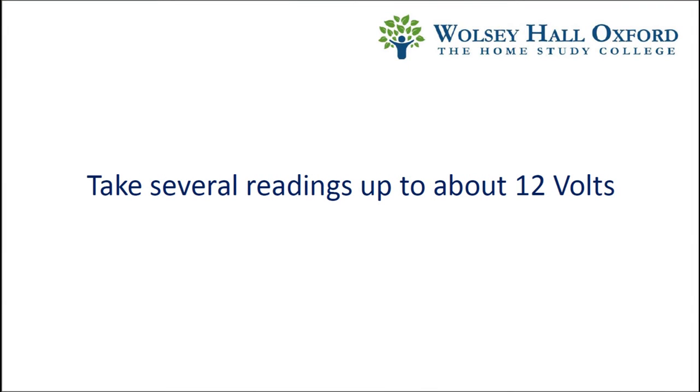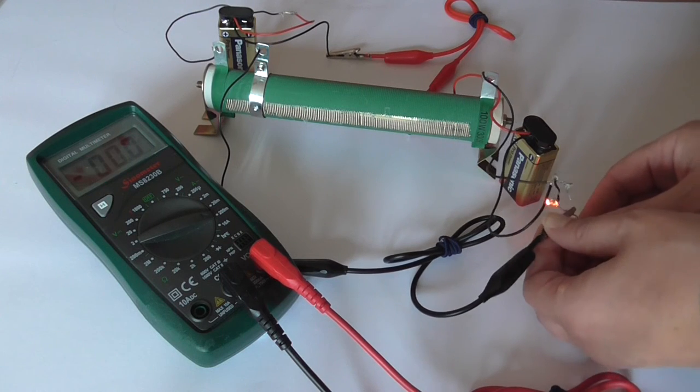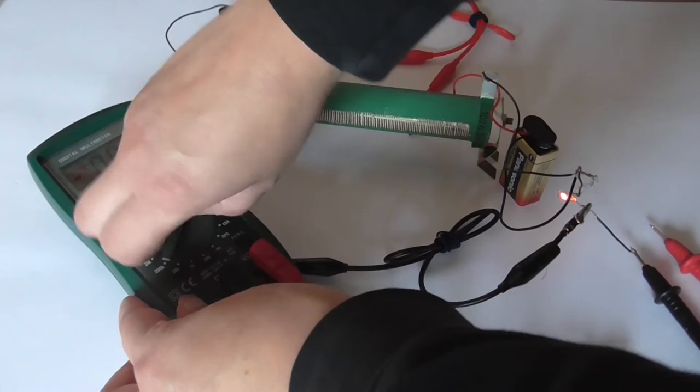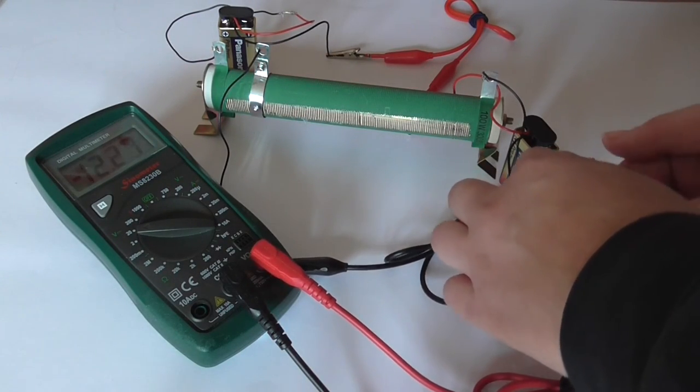We take several readings up to around 12 volts. Since this is the operating voltage, the light actually works. Although it's still not very bright because it's only 0.3 watts.